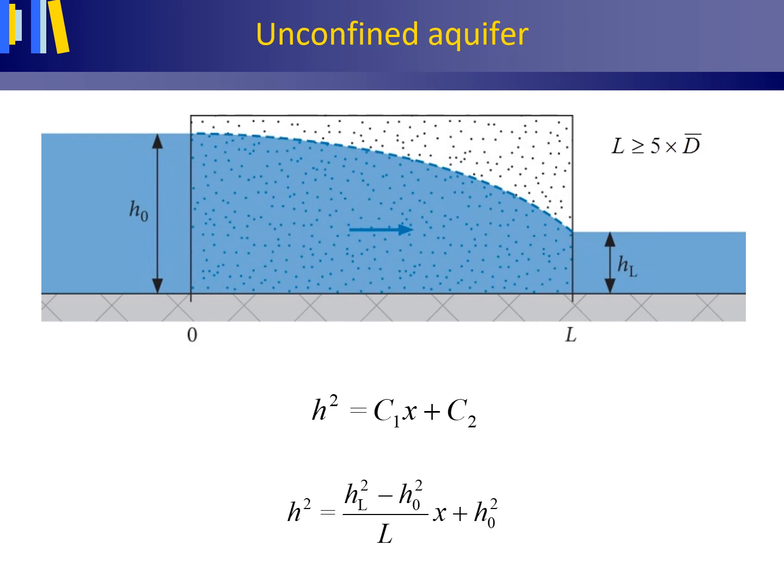Again, same as with the earlier case of confined groundwater flow, inserting the boundary conditions for known values of H0, L, and HL. First, the left boundary condition for x=0, H equals H0 to deliver C2.